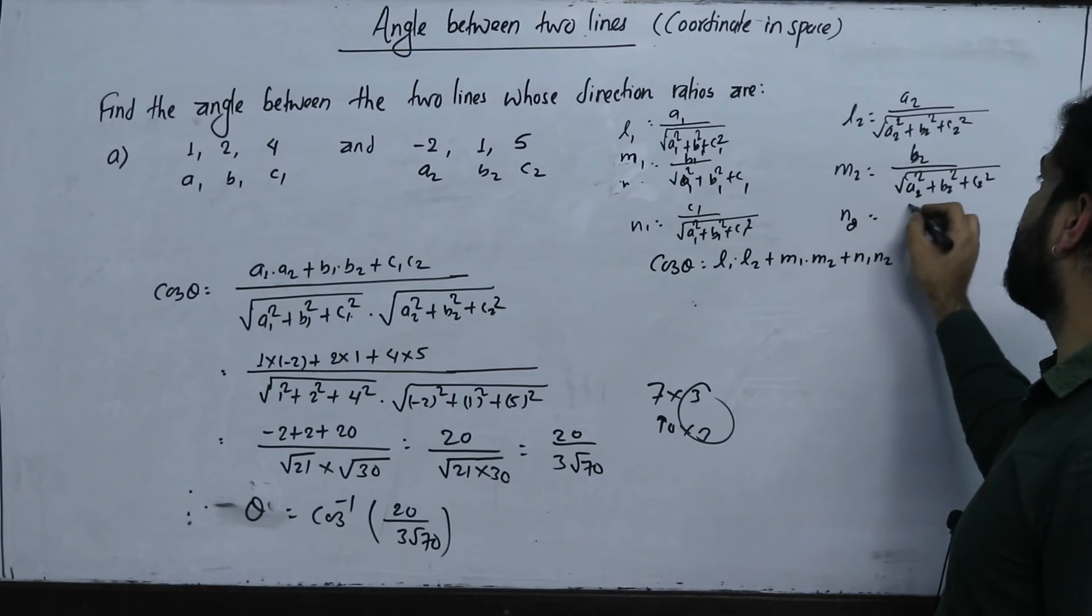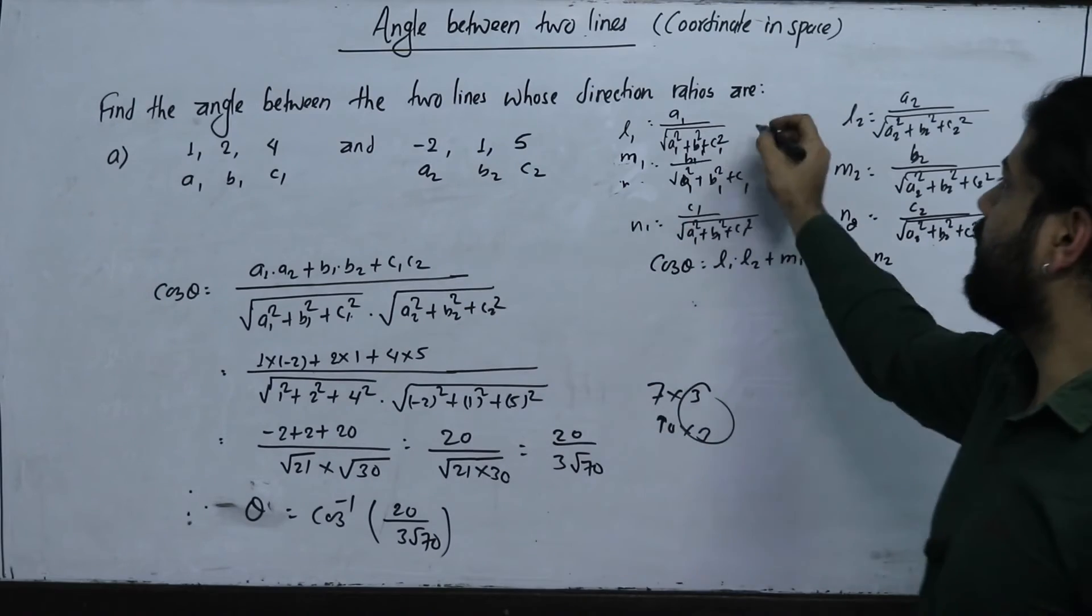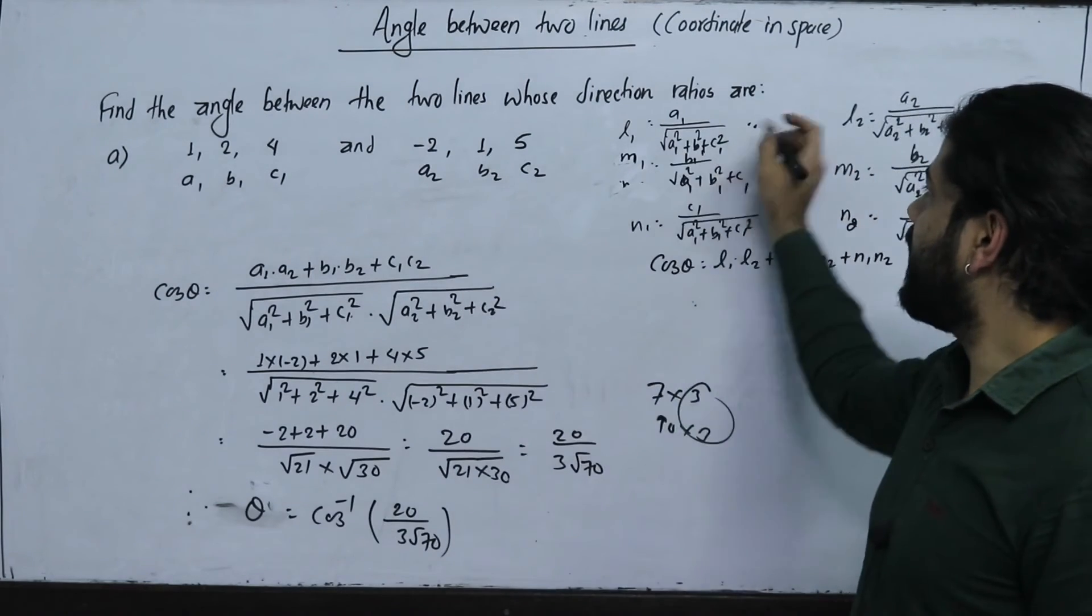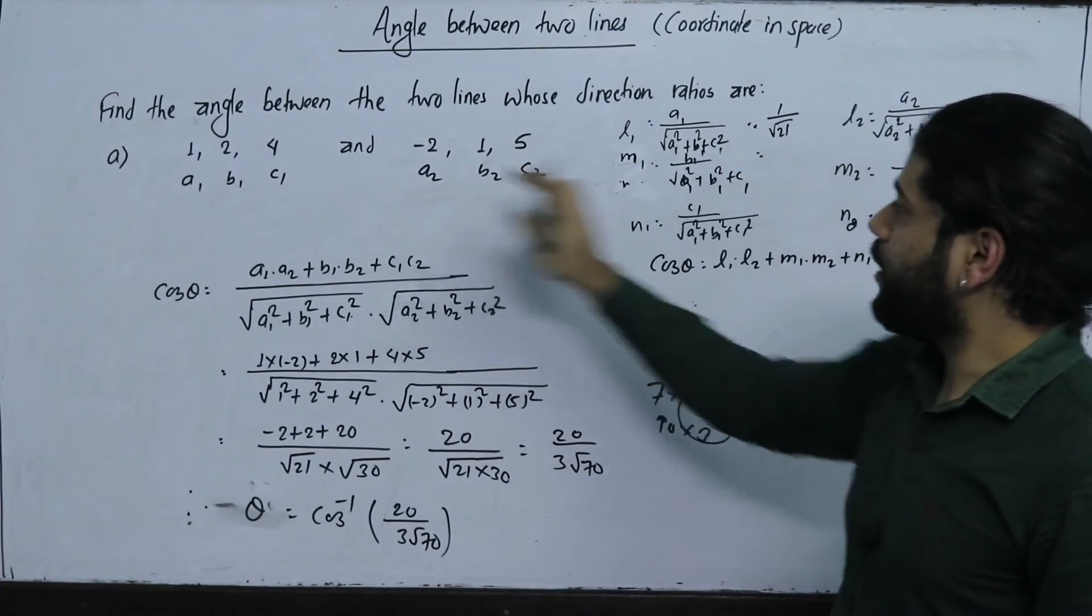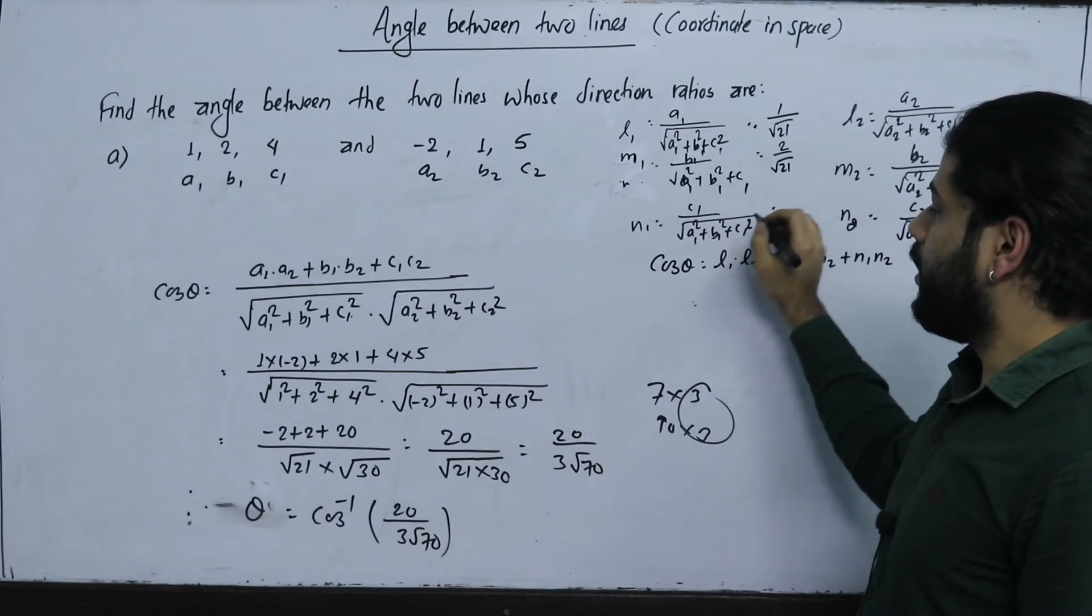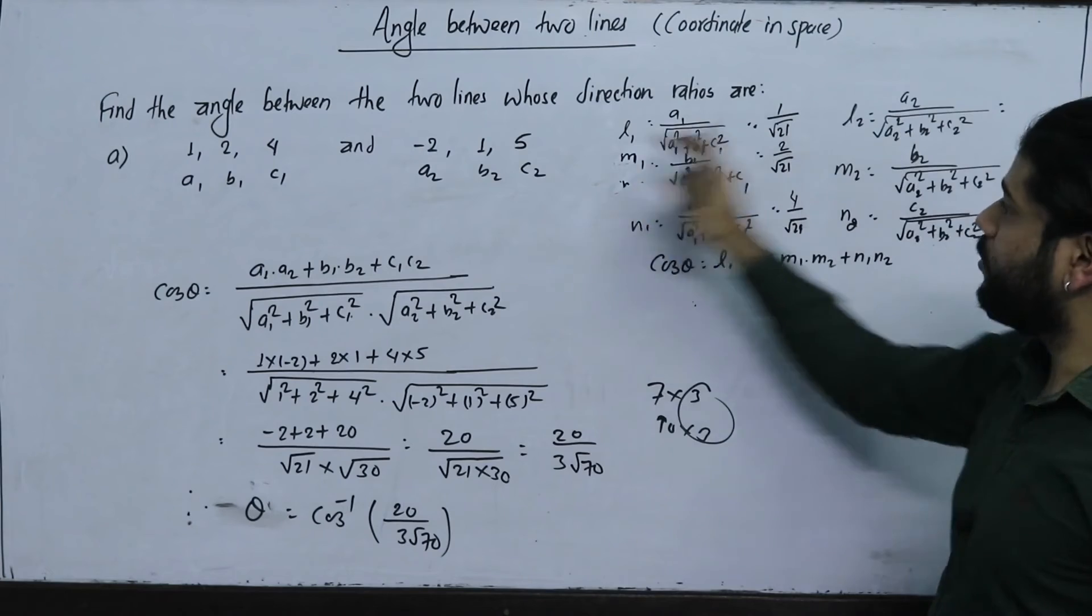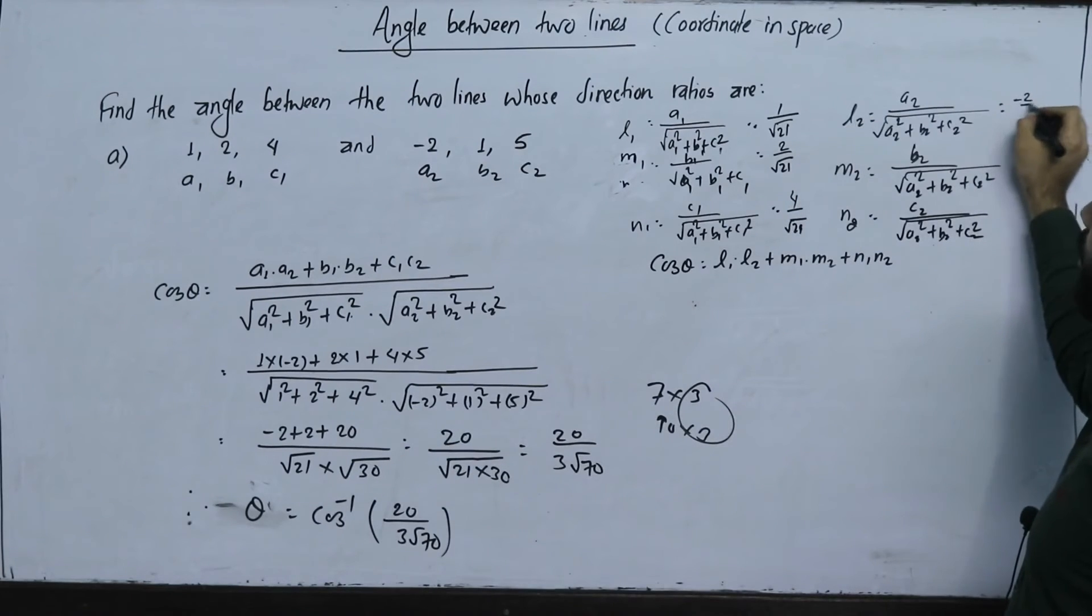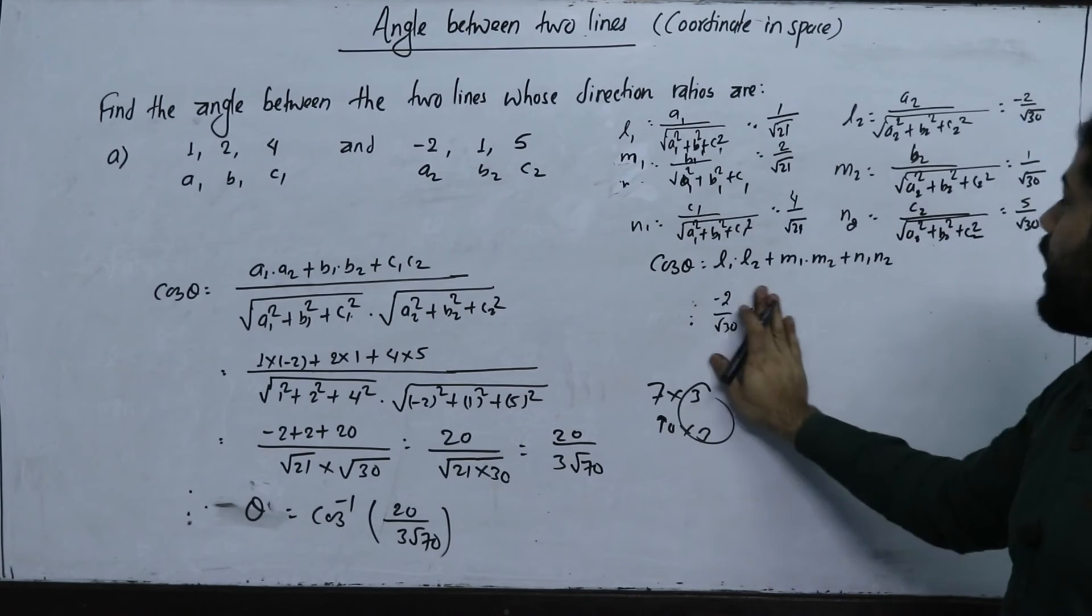So L1 is 1 over root 21, M1 is 2 over root 21, N1 is 4 over root 21. And L2 is minus 2 over root 30, M2 is 1 over root 30, N2 is 5 over root 30.